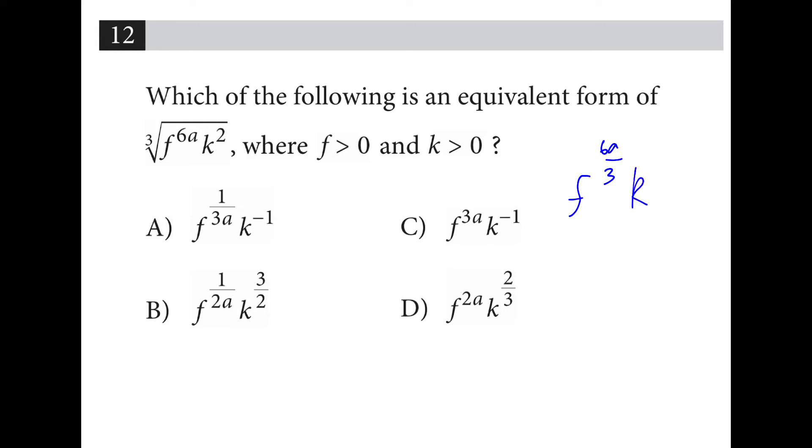And then if I look at k, I have 3 as the denominator and 2 as the numerator. So 6 over 3 simplifies as 2, and there's my answer.